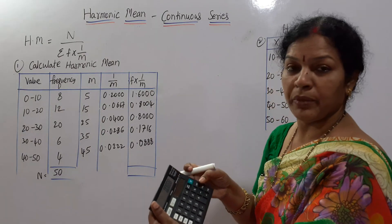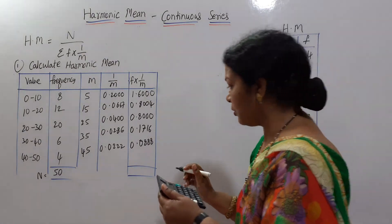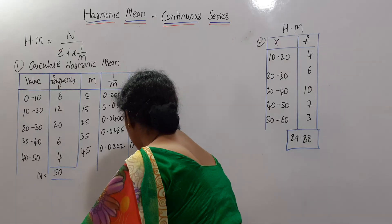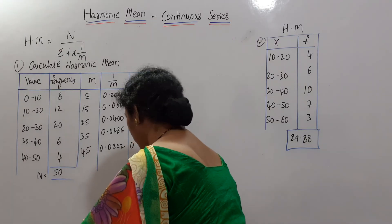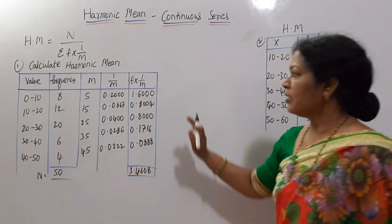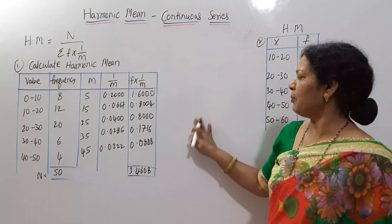If I press M, MR, I will get the total. Total is 3.4608. Got this. Apply it in the formula.